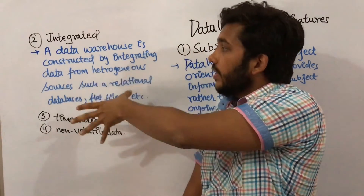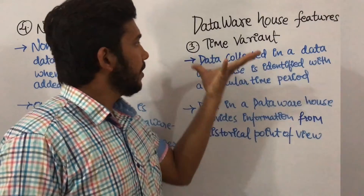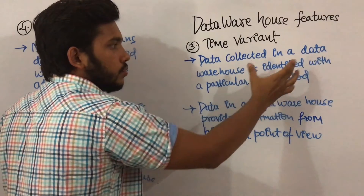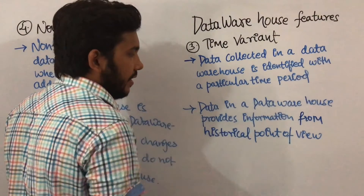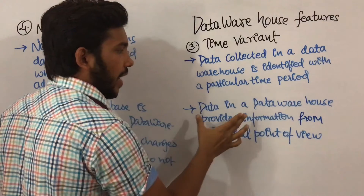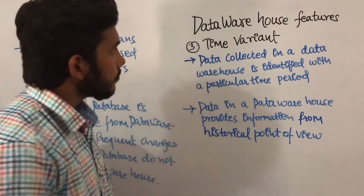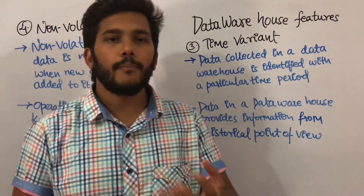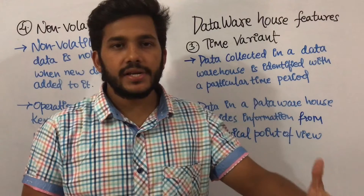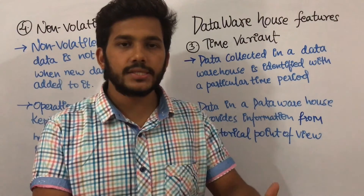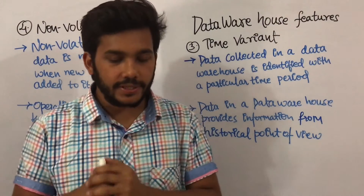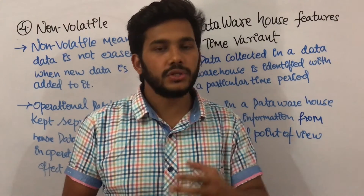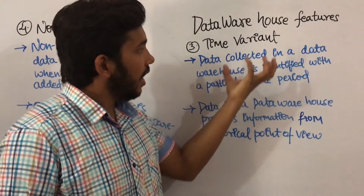The third feature is time variant. Data collected in a data warehouse is identified with a particular time period and provides information from a historical point of view. For example, in a restaurant, I can collect data from the opening year through three years, and then the next three years, and compare how sales changed over those periods.